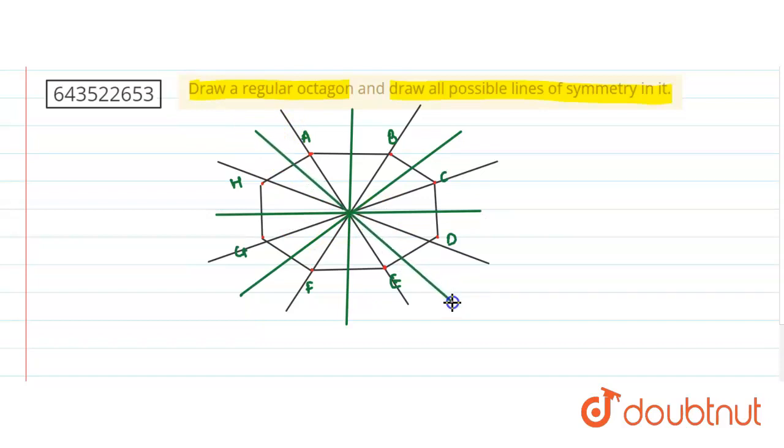Now if we count this all, we get what, total eight lines of symmetries for this regular octagon. So just count them, this is 1, 2, 3, 4, 5, 6, 7, and 8. So these are all eight lines of symmetries for the regular octagon.